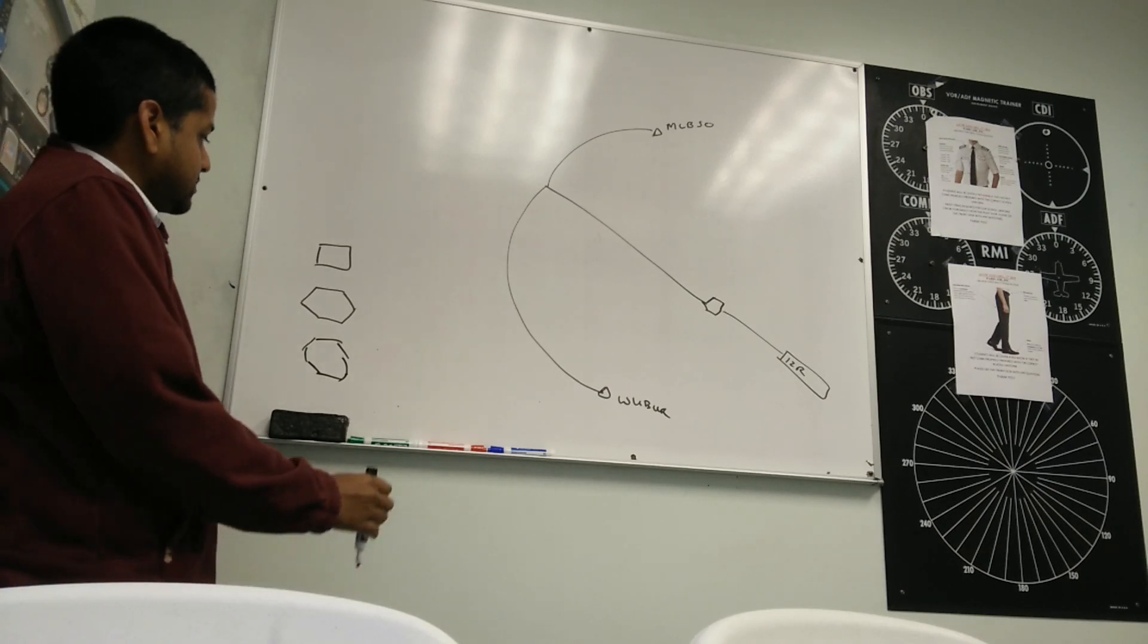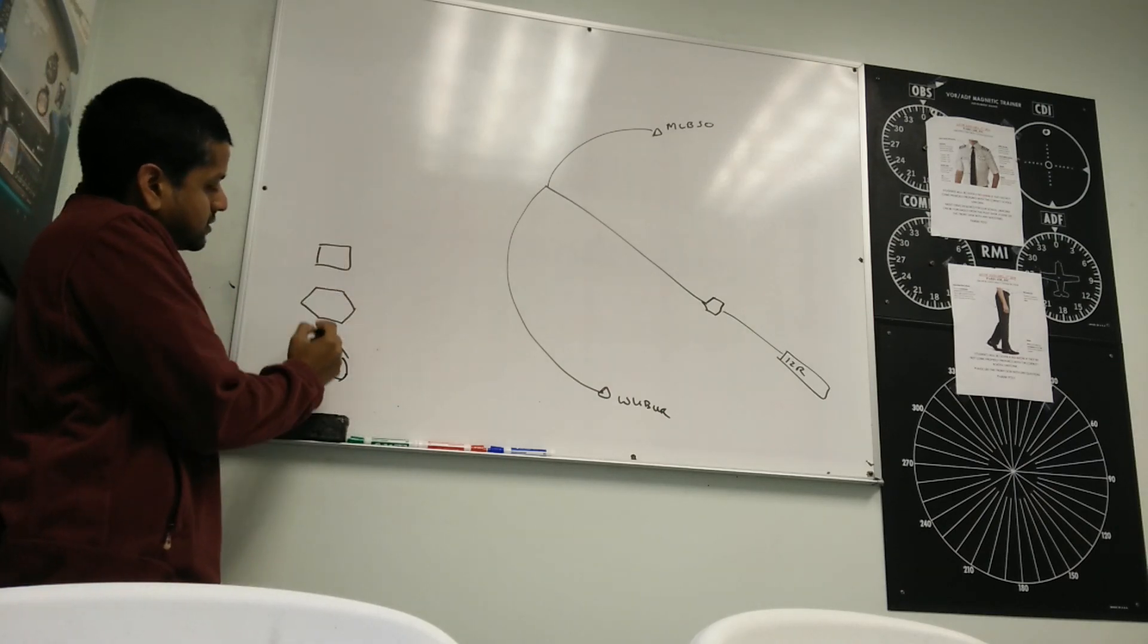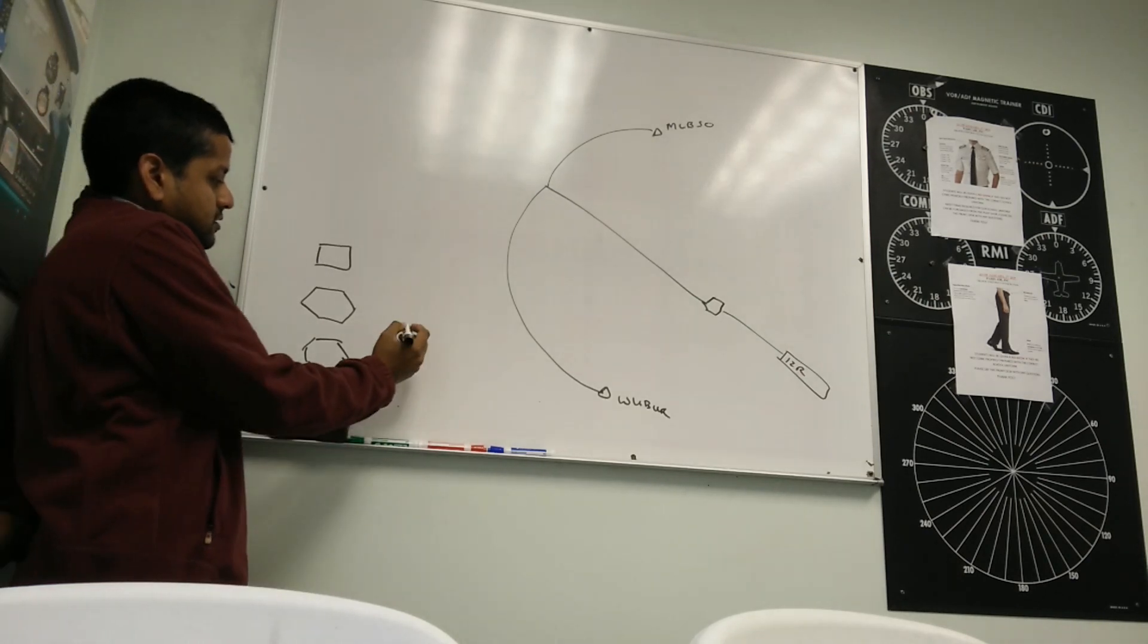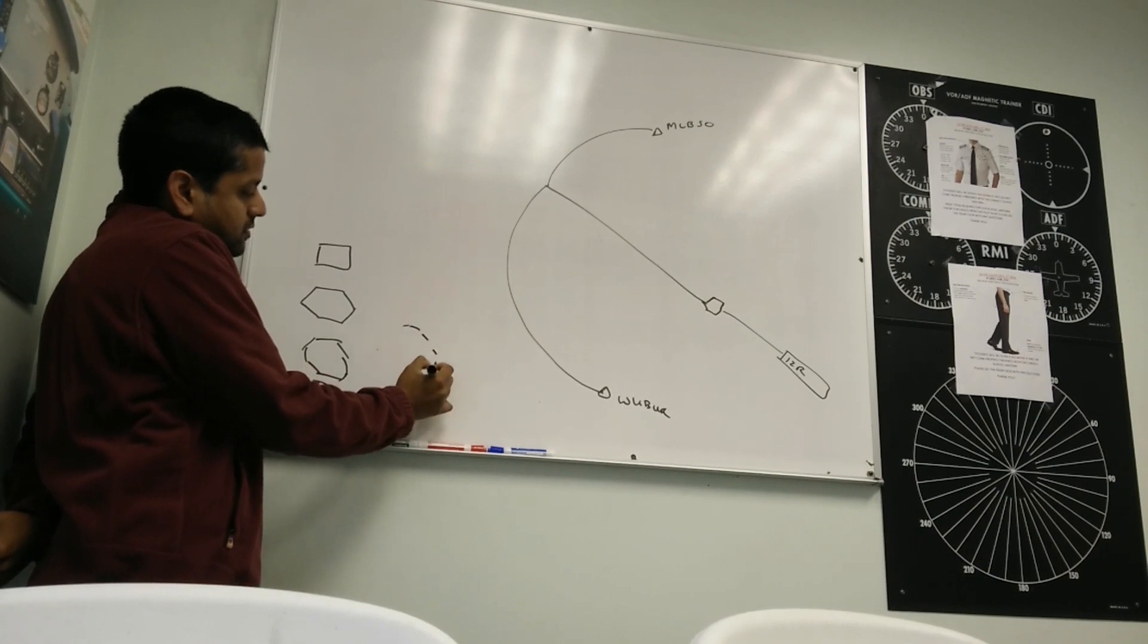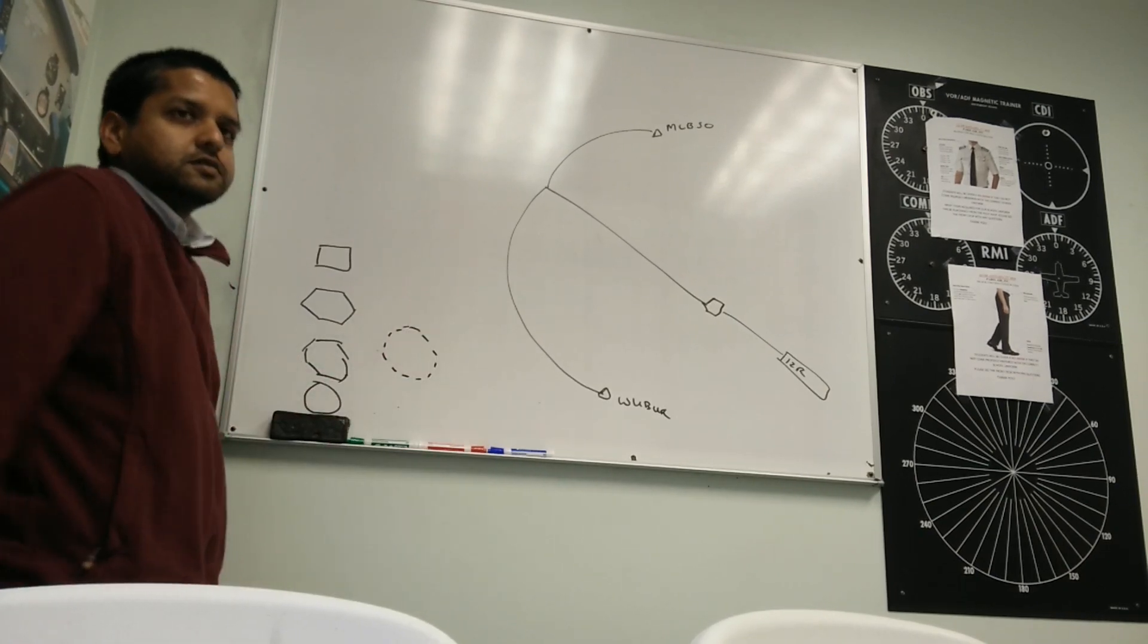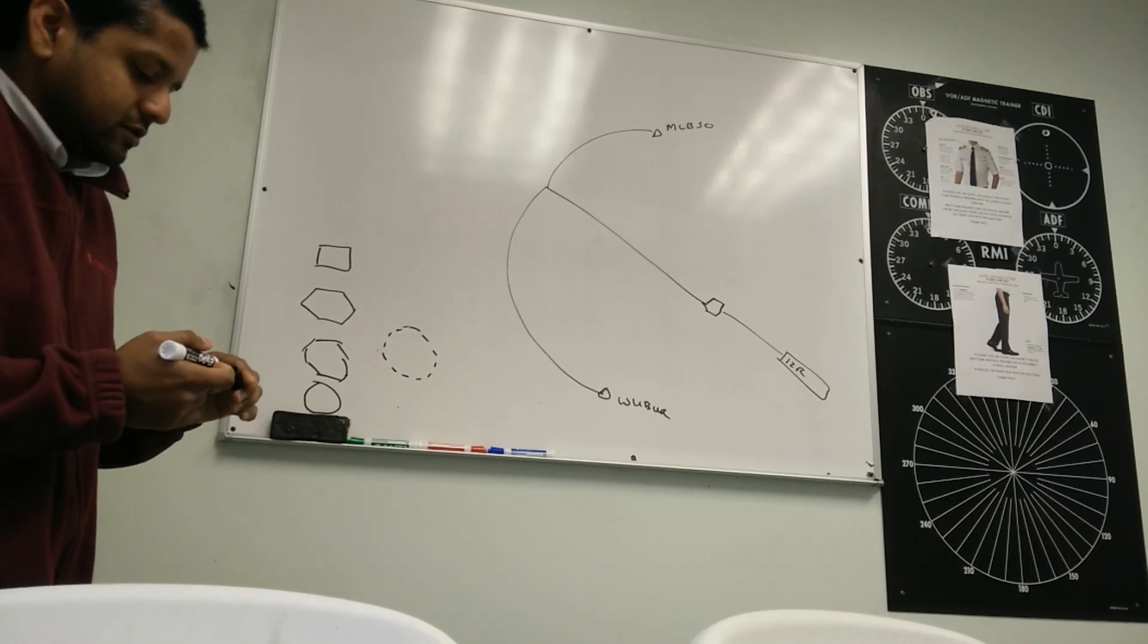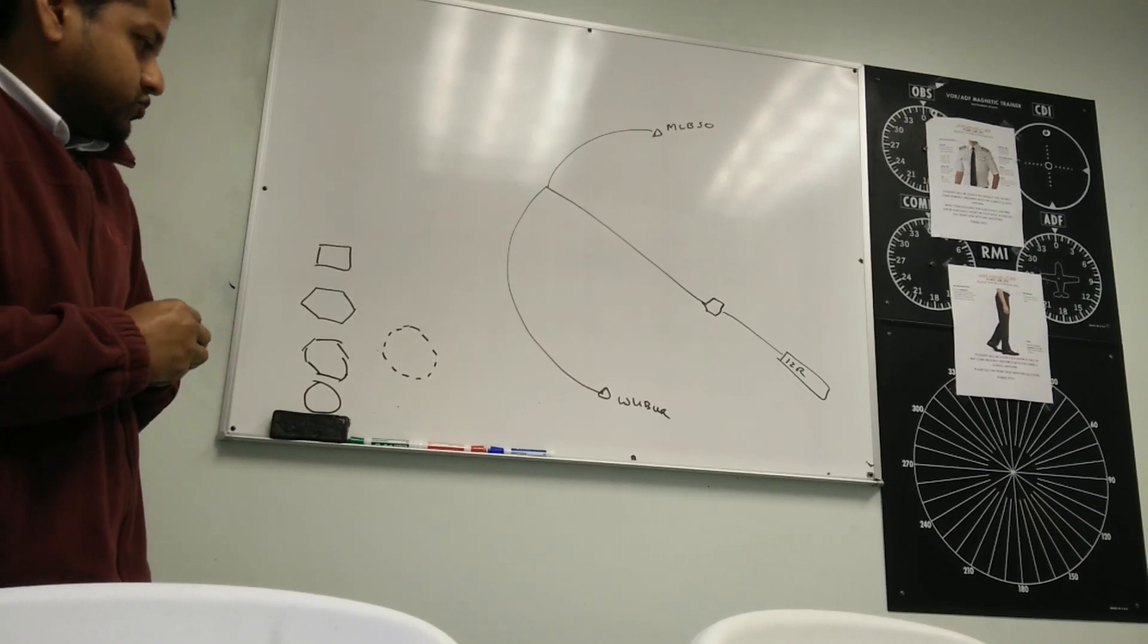What about this one? This is an octagon. How many sides? Eight. Now you can see, gradually, it's forming a circle. So what is a circle? A circle, basically, is many straight lines joined together. You keep changing heading. So that's what a circle is. A circle is many straight lines.